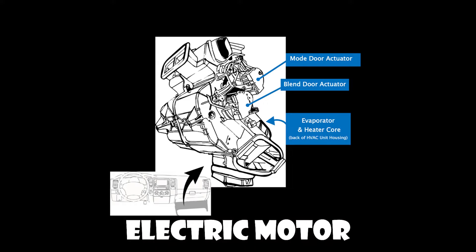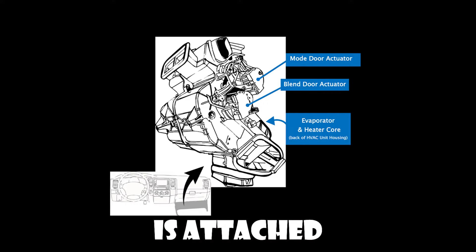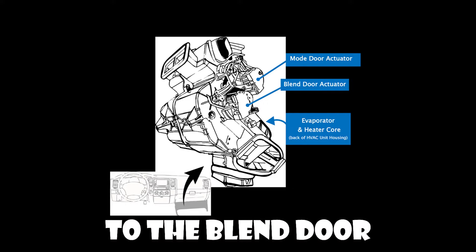This small electric motor is attached to the blend door in the HVAC — heating, ventilation, and air conditioning — system, and functions to move the door, directing the air to either the heater core or the evaporator coil based on the temperature settings chosen by the driver or passengers.